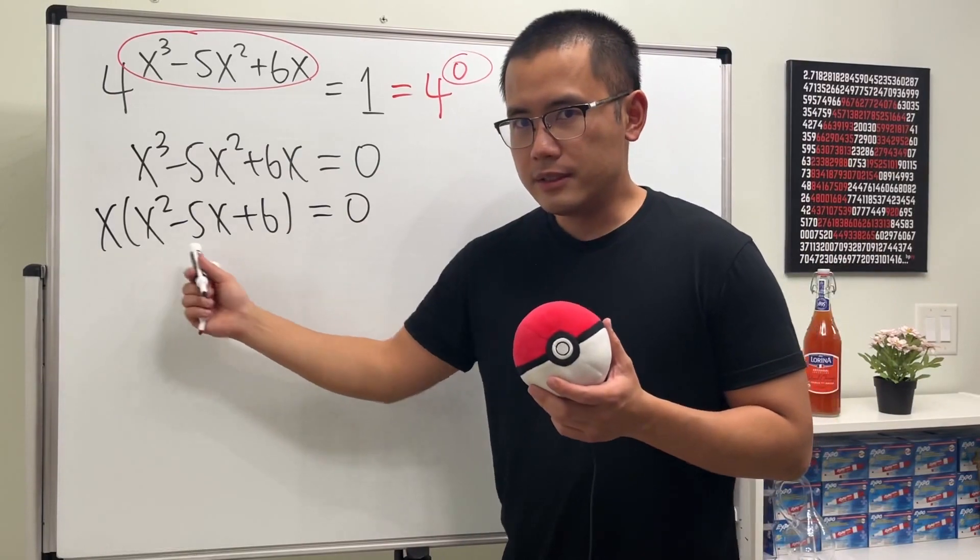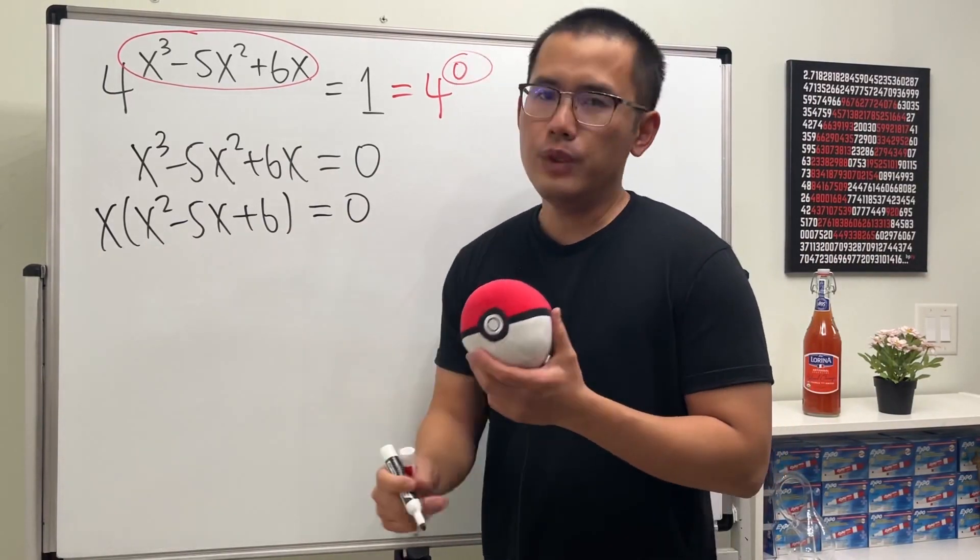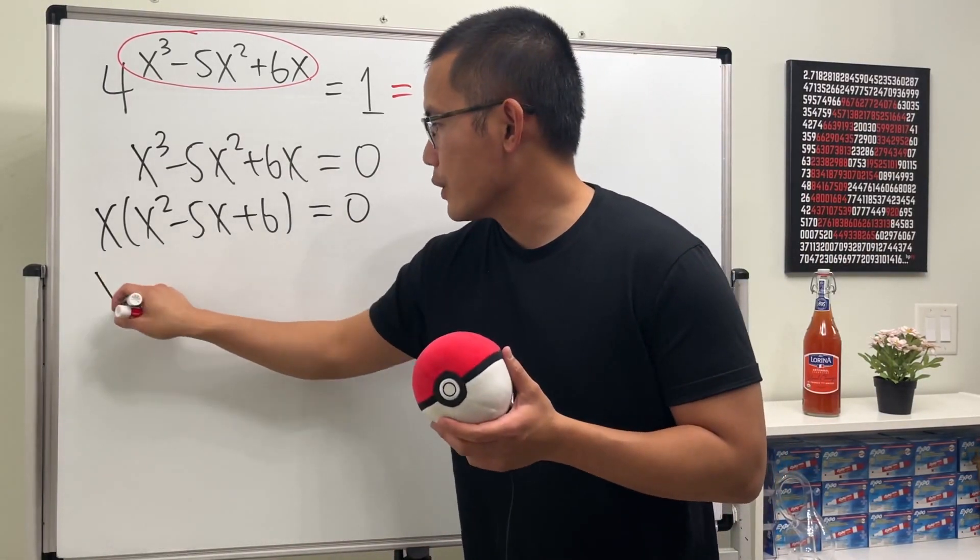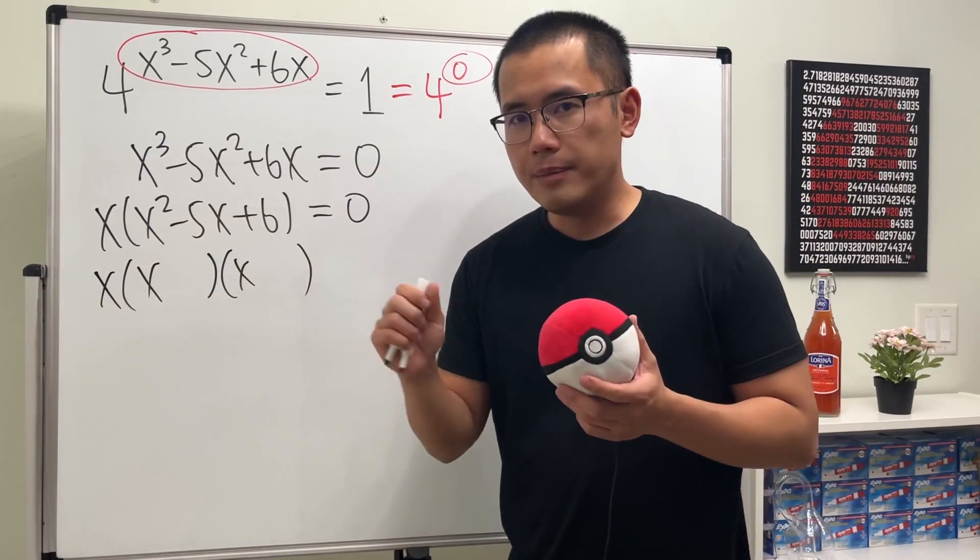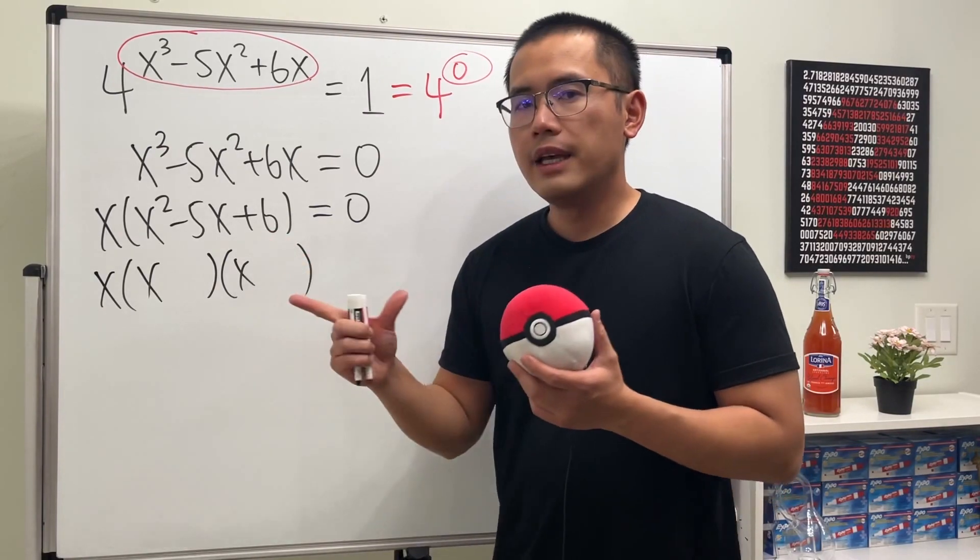And this is just a quadratic inside of the parentheses. We can factor it with ease, right? So we just get x times x. All right, we need two numbers that multiply to be positive 6, and when we combine them we get negative 5.